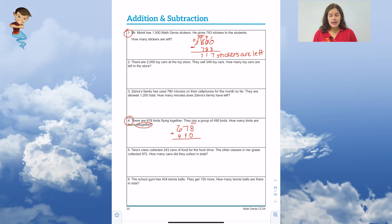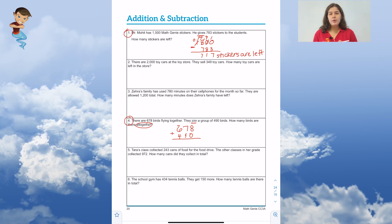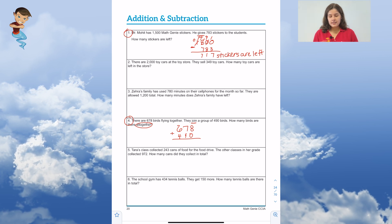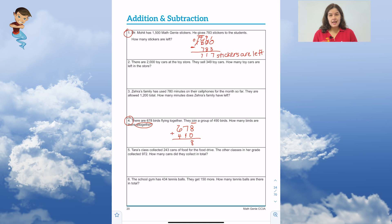Once again, you can see I lined up my numbers based on their place value. This is very important to adding and subtracting properly. So now we're going to add. From the right to the left, 8 plus 0 is 8. 7 plus 9 is 16.